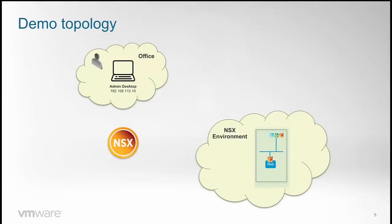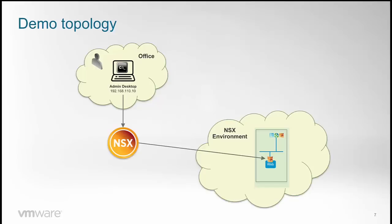The topology we are using is pretty simple. We have an ESXi host with a web VM that connects to a network created by NSX. From the admin desktop we are going to SSH into the NSX manager. We will enter a few commands that will start a trace on the web VM. The trace itself will be copied through the NSX control plane to the NSX manager, and then we will enter a few SCP commands that will allow the admin to retrieve the packet capture to his or her desktop to be further analyzed with Wireshark.